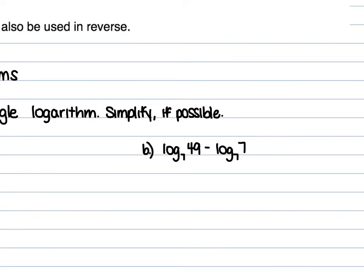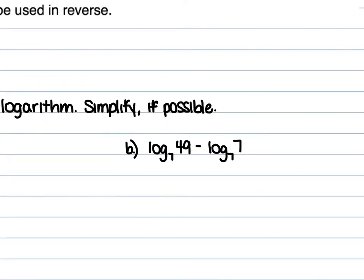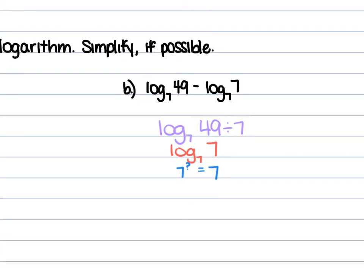For B, we have log₇ of 49 minus log₇ of 7. Keep the log₇ and divide 49 by 7. 49 divided by 7 is 7, so we have log₇ of 7. 7 to what power is 7? The first power, so 1 is our solution.